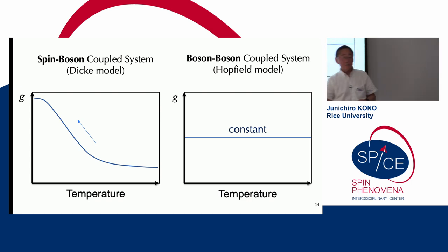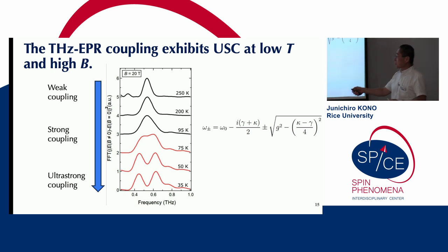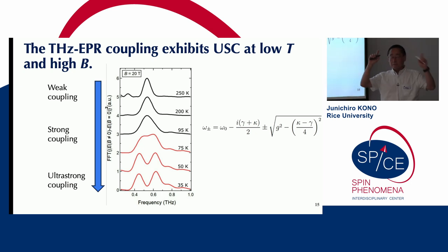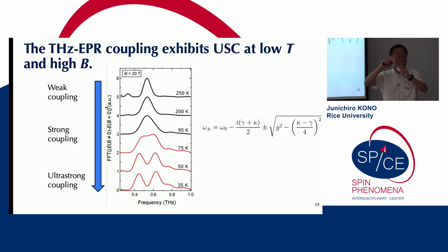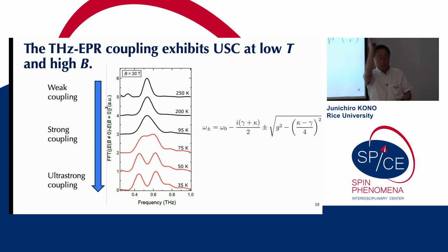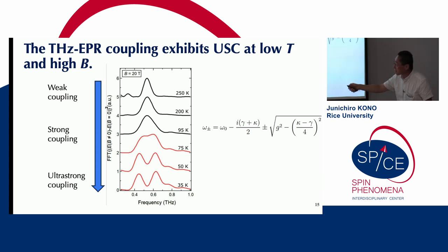This allows us to observe the interesting interplay between light-matter coupling and dissipation. At high temperatures, the coupling constant G is weak — kappa and gamma win, so we have a single mode. But as we cool down the system, we pass through an exceptional point, below which we see splitting. By just cooling the system down, we can go from weak coupling through strong coupling to ultra-strong coupling.